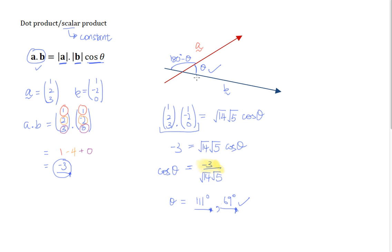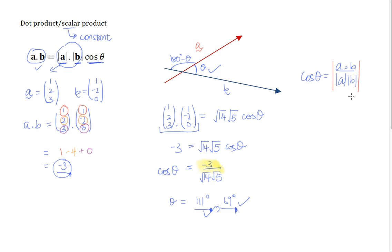If the question doesn't specify obtuse or acute, either answer will work. But most of the time we leave our answer in acute angle form. You may also see a variation of this formula: cos θ = (A·B) / (|A||B|). Some teachers include a modulus sign for the whole expression to ensure the result is always positive, giving an acute angle directly.